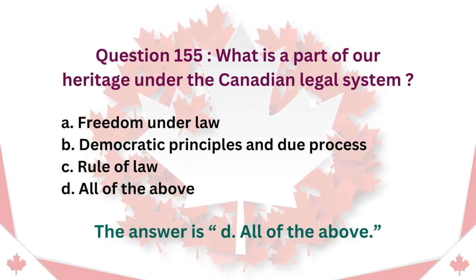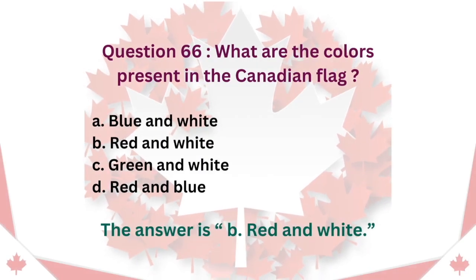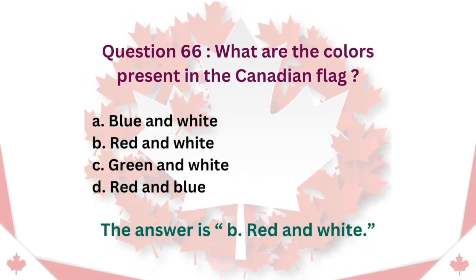Question 155: What is a part of our heritage under the Canadian legal system? A. Freedom under law. B. Democratic principles and due process. C. Rule of law. D. All of the above. The answer is D. All of the above.